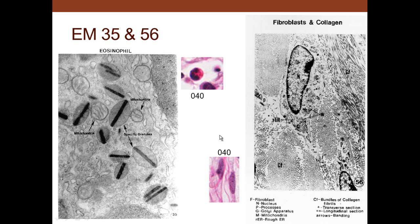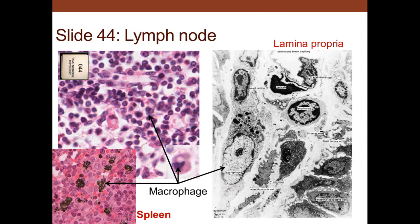In contrast, fibroblasts have a cigar-shaped nucleus. This fibroblast produces collagen fibers that are seen in longitudinal or cross-section in the extracellular matrix outside the cell.